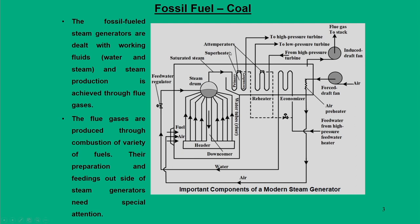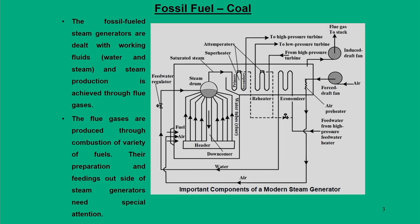Let us start with fossil fuel, that is coal. In a modern steam generator, we require a source of energy to generate steam, and for that we need combustion of fuel and air. To get steam from water, we require heat from the fuel which is fed in. This fuel generates flue gas after combustion, and in the entire circuit the flue gas goes to the atmosphere through the stack. Fossil fuel steam generators use water or steam as the working fluid, and steam production is achieved through flue gases produced by combustion using a variety of fuels — solid, liquid, and gas — but most efficiently solid fuel, that is coal.